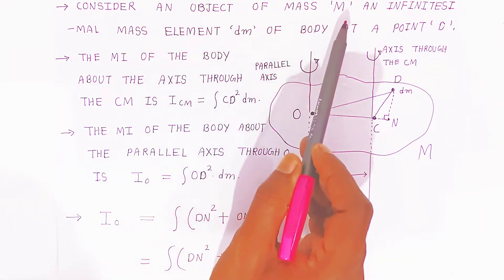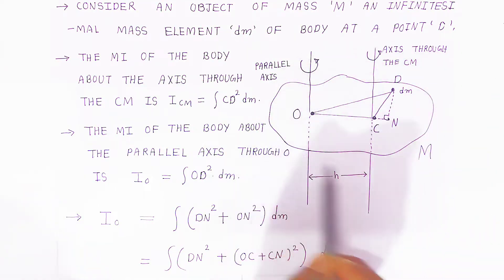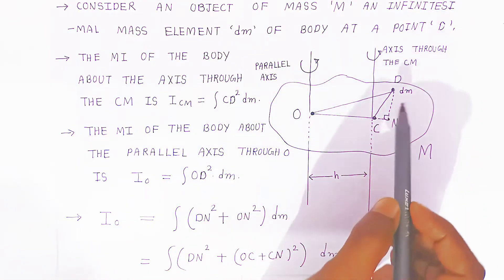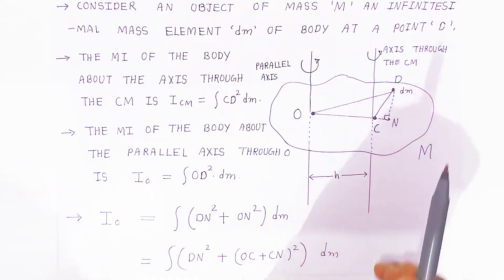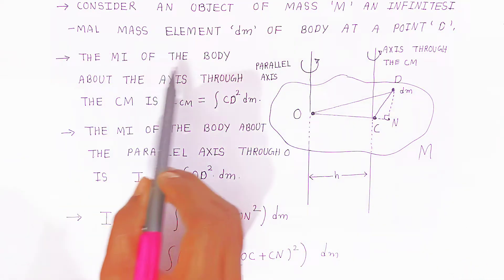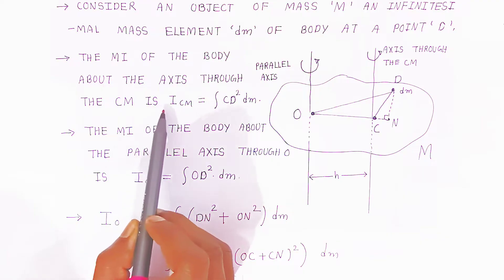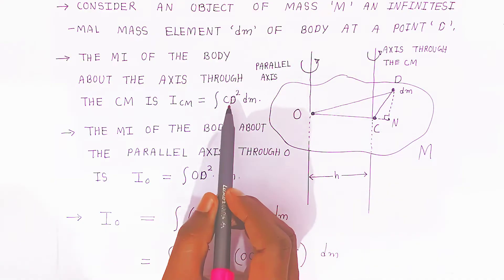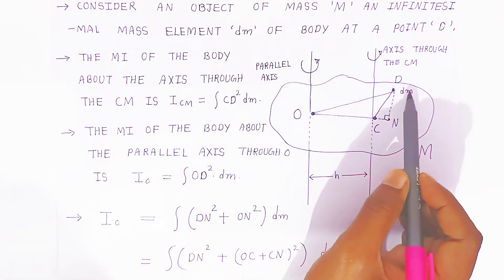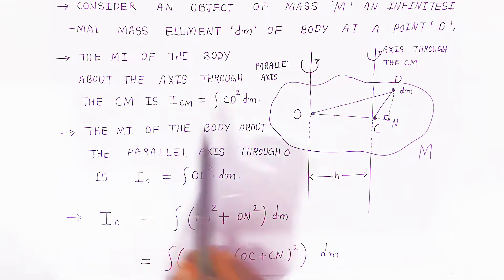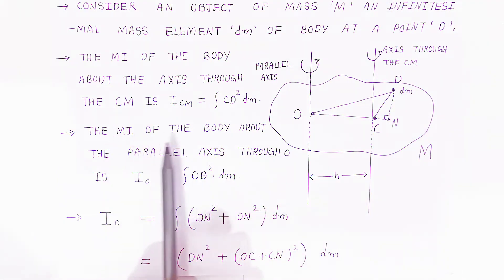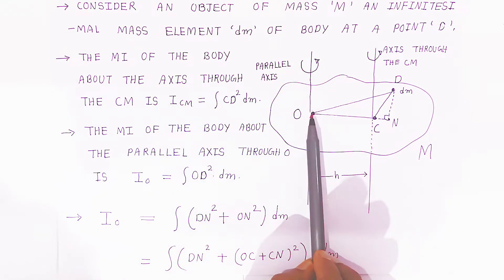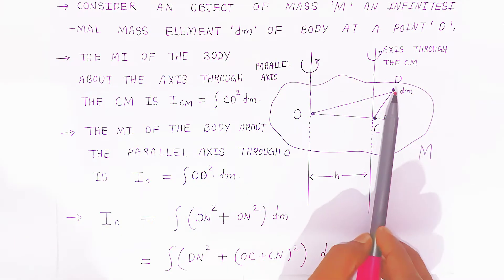Consider an object of mass M, and an infinitesimally small element DM of the body at a point D. The moment of inertia of the body about the axis through its center of mass is given by IC equals integration of CD squared DM. The moment of inertia of the body about the parallel axis through O is IO equals integration of OD squared DM.